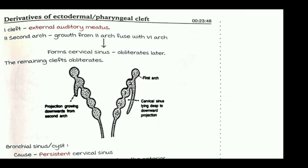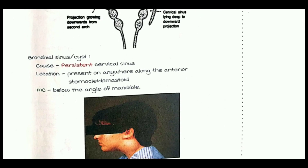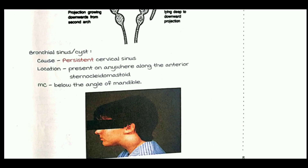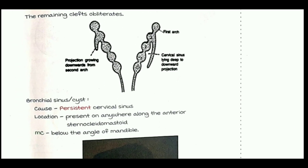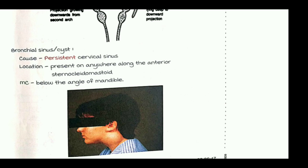Only the first cleft forms a persistent derivative — the external auditory meatus — while all other clefts obliterate. However, if the cervical sinus persists instead of obliterating, it results in a condition called branchial sinus or branchial cyst. This can appear anywhere along the anterior border of the sternocleidomastoid muscle, but most commonly it is seen below the angle of the mandible.